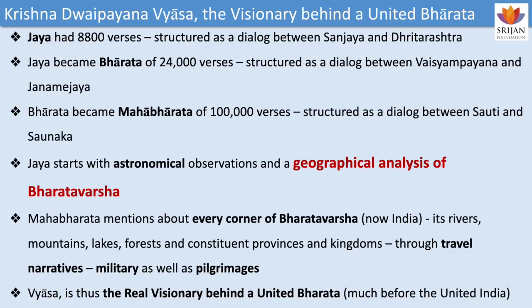It may be known that Mahabharata is considered to have grown from 8,800 verses to 24,000 to 100,000. The core is the dialogue between Sanjaya and Dhritarashtra. Then you have Vaishampayana and Janamejaya in discourse, and then again Ugrasrava, Sauti, and Shaunaka in discourse — all separated by large periods of time. There is much dispute about the number of verses, but I am not going into those details.